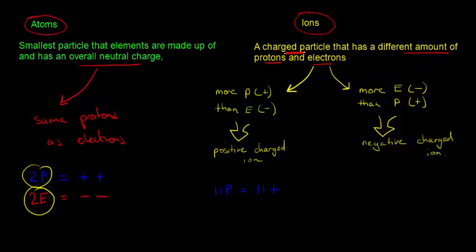For example, if I take 10 electrons — so I have 11 protons but 10 electrons — I will have 10 negative charges. What's 11 minus 10? That's 1. So I basically have one extra positive. I would write this as Na⁺, because I have one more positive than negative.